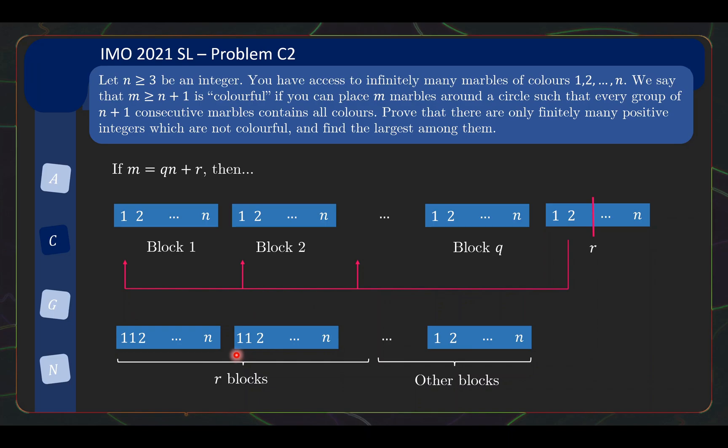Does this construction work? Well, indeed it does, because if you take any consecutive blocks of n plus 1 marbles, you'll see that it will indeed cycle through all the colors again, except with the repeated color being 1, right? So 1 is the repeated color. If you start with like 4, you'll go all the way to 3 here, and then 1, 1 is the repeat. So you can check that all the blocks here will end up fulfilling the requirement, and so does the blocks that loop around.